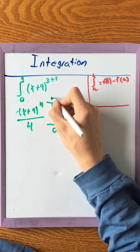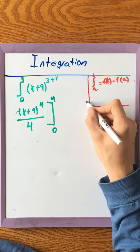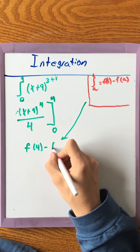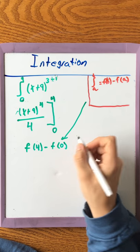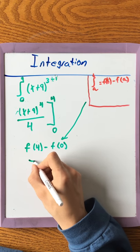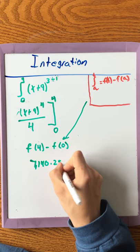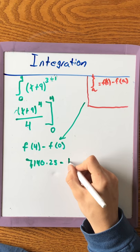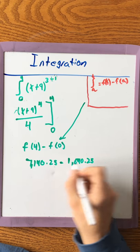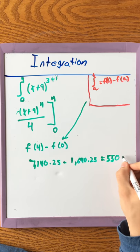We evaluate on the bounds from 0 to 4 using f(4) minus f(0). Plugging in 4 gives 7140.25, and f(0) equals 1640.25. Simple subtraction gives an answer of 5500.